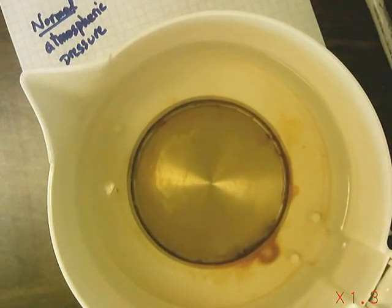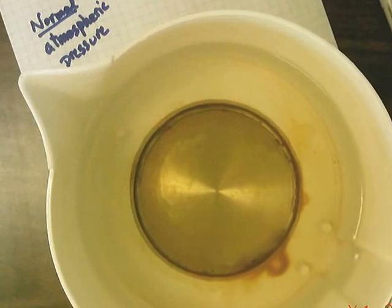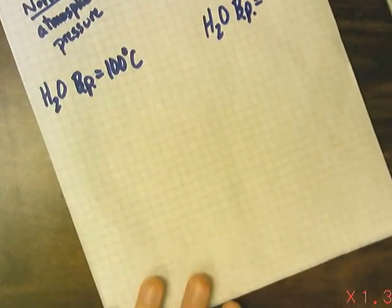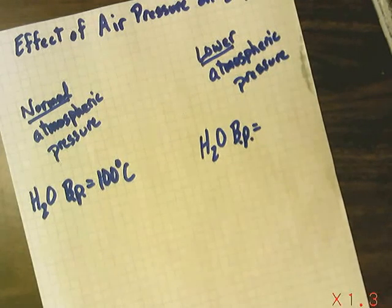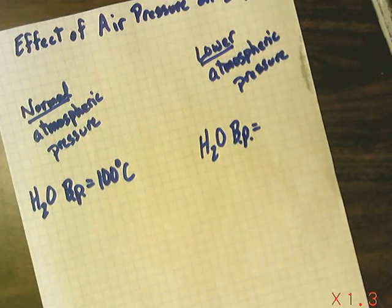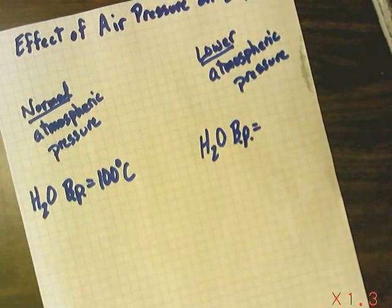Some water is boiled in a hot pot. It is observed that the temperature of the boiling water is 100 degrees Celsius. This is an experiment conducted to test the effect of atmospheric pressure on the boiling point of water.